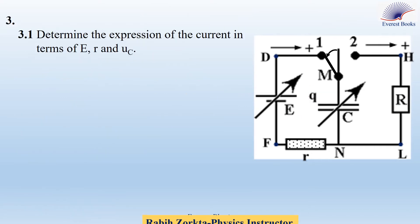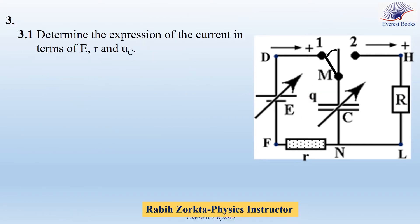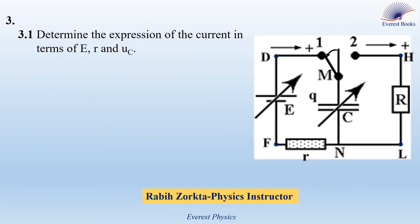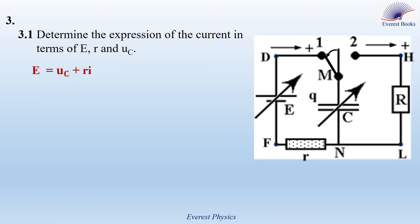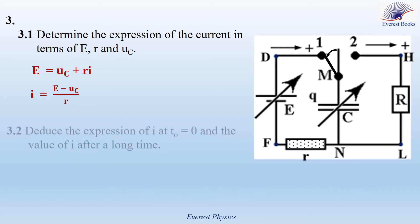Part 3.1: Determine the expression of the current in terms of E, small r, and UC. We proved in the previous slide that E = UC + r·I. Rearranging, I = (E − UC) / small r.